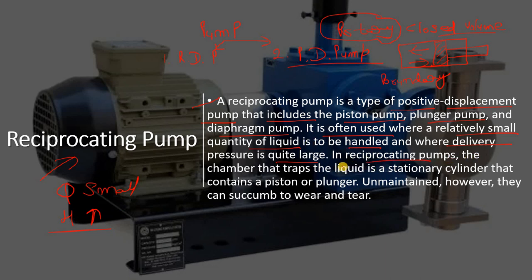In a reciprocating pump, the chamber that traps the liquid is stationary — a stationary cylinder containing a piston or plunger. However, they can be subject to wear and tear because you are changing the boundary with the piston and plunger. Please watch our previous detailed videos on reciprocating pump.